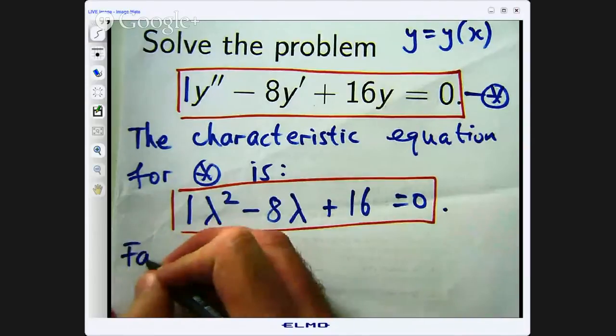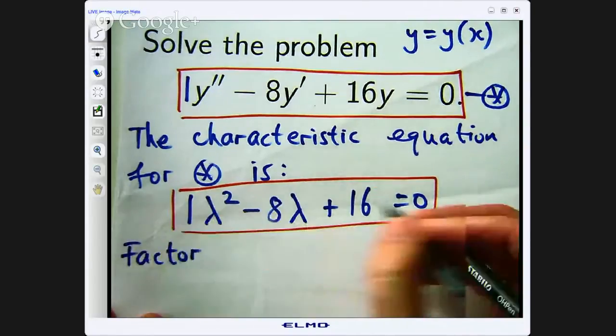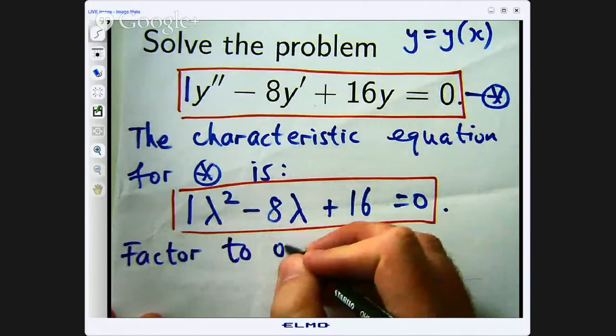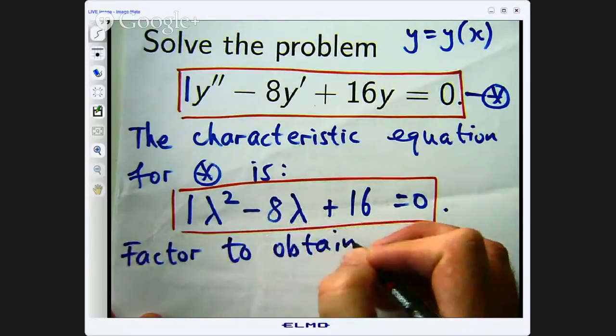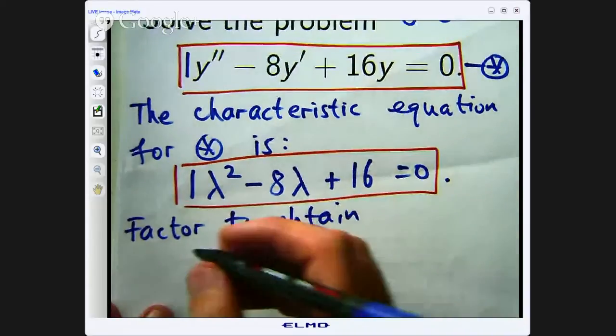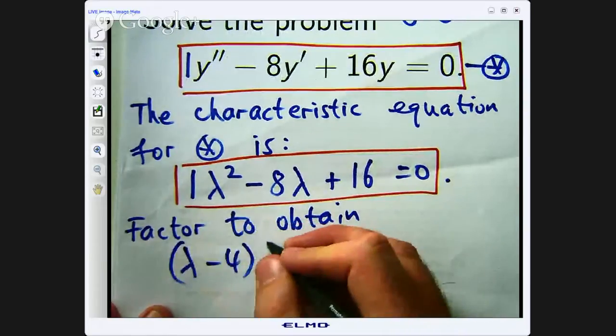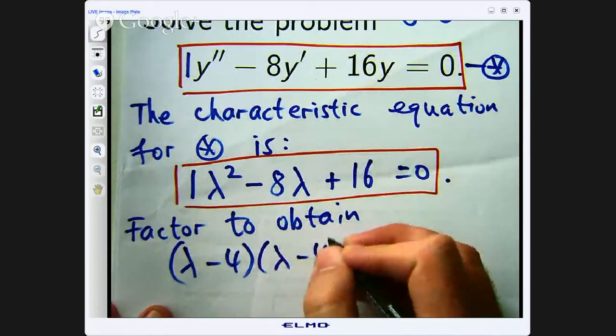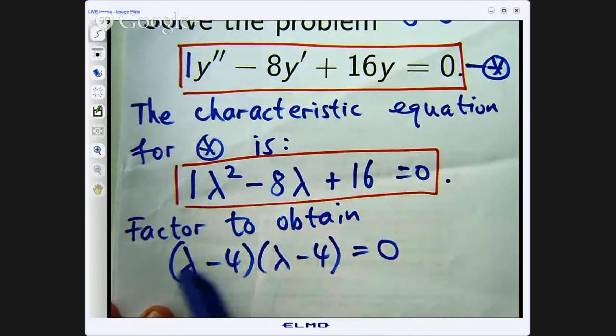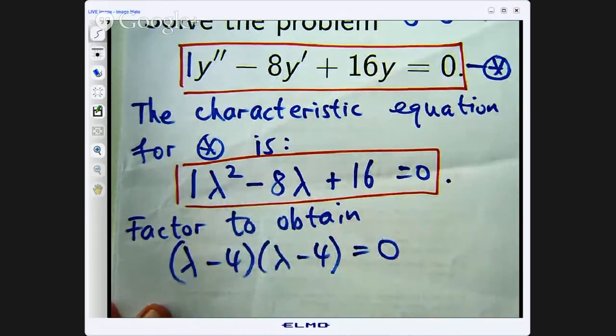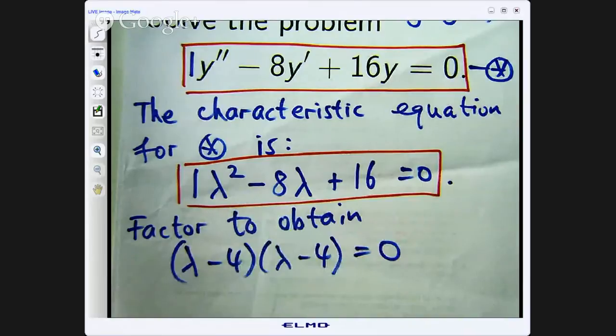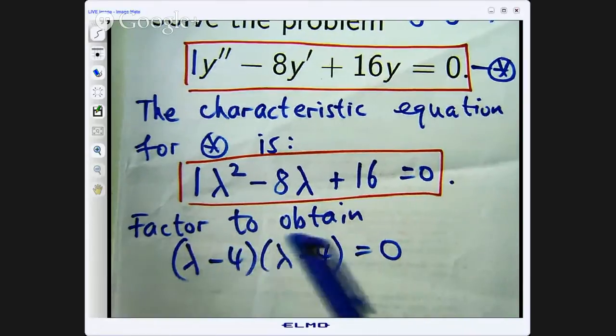So let us do that. We are going to factor this to obtain, it is actually a perfect square. So, you are going to have something like this. You could have a squared here. I am just going to write it out like this. So the left hand side has been factored.